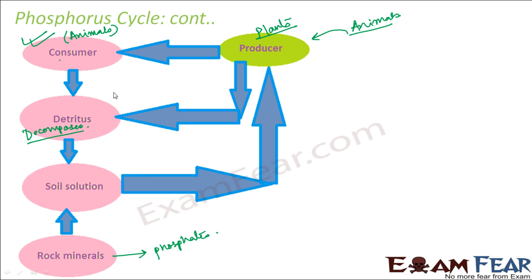So phosphorus gets exchanged between the lithosphere, biosphere, and hydrosphere. This was the lithosphere; the biosphere is where plants and animals are involved. As for the hydrosphere, there are many aquatic animals as well. Soil solution is not present only on land — at the bottom of the oceans you also have soil. That is how phosphorus gets exchanged between these three spheres.